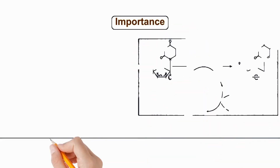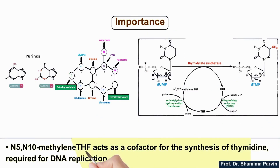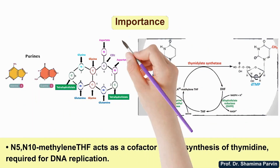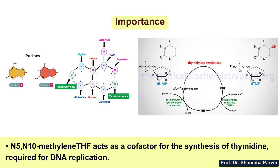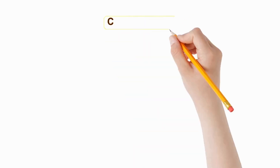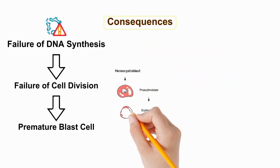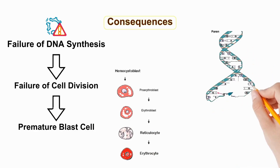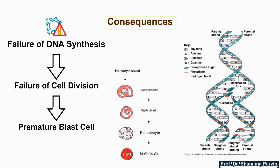Now let's talk about the importance of active tetrahydrofolate. It plays a key role in the production of purines and is involved in two steps of purine biosynthesis that add a formyl group to close the ring. It also helps in the production of pyrimidines by carrying one-carbon groups. For DNA synthesis and replication, both purines and pyrimidines are needed, and without active tetrahydrofolate, they cannot be produced.